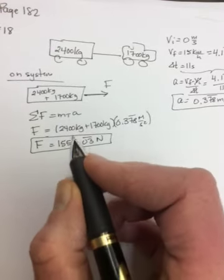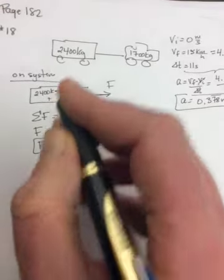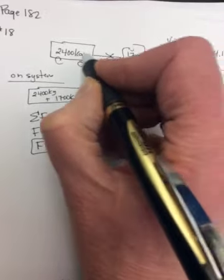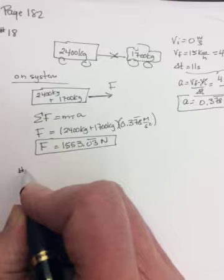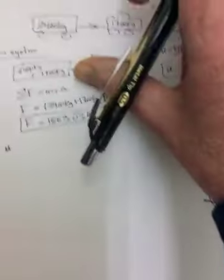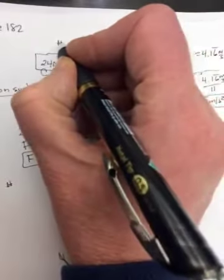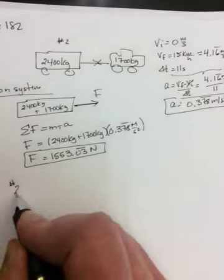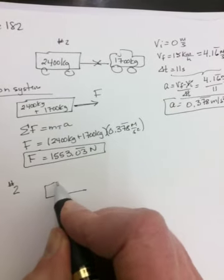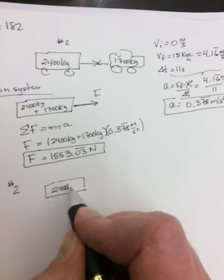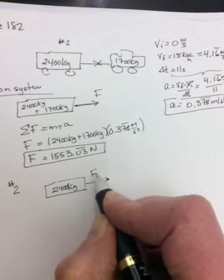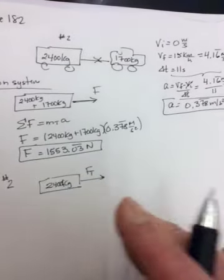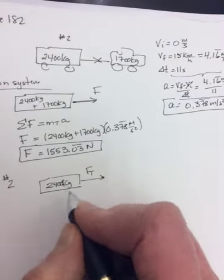Then it wants the minimum strength in the rope between them. So that's like the tension in here. So when you're doing that, you need to look at just one object. So look at the larger vehicle in behind. Look at number two.